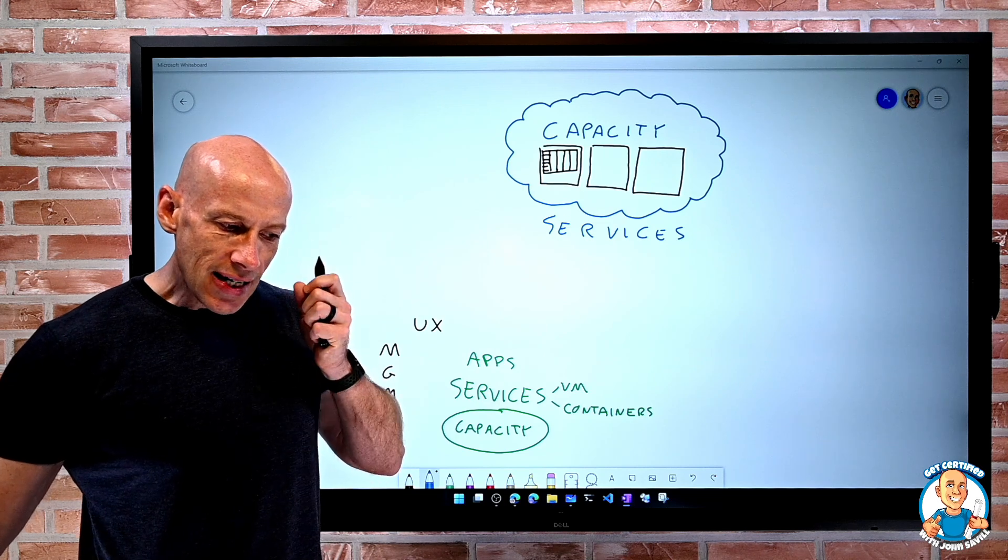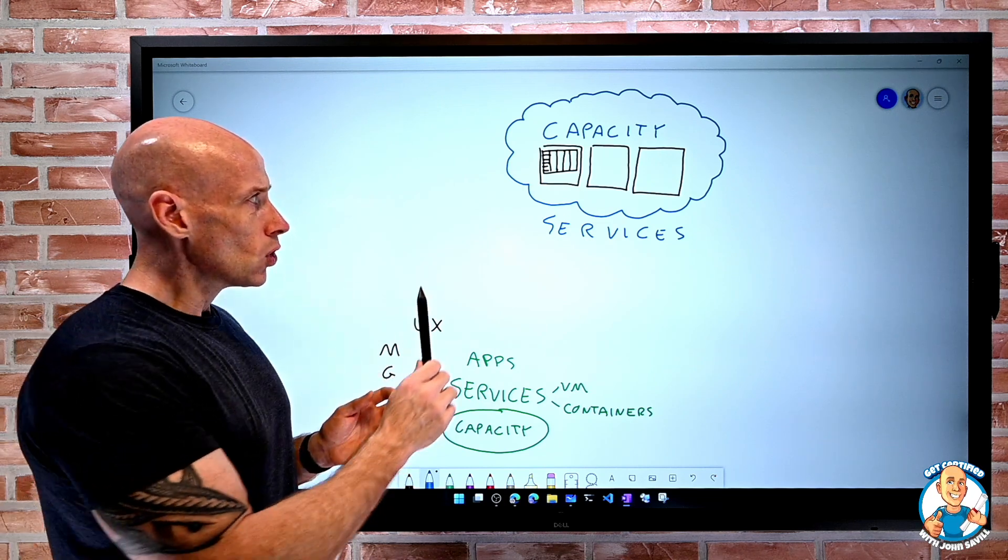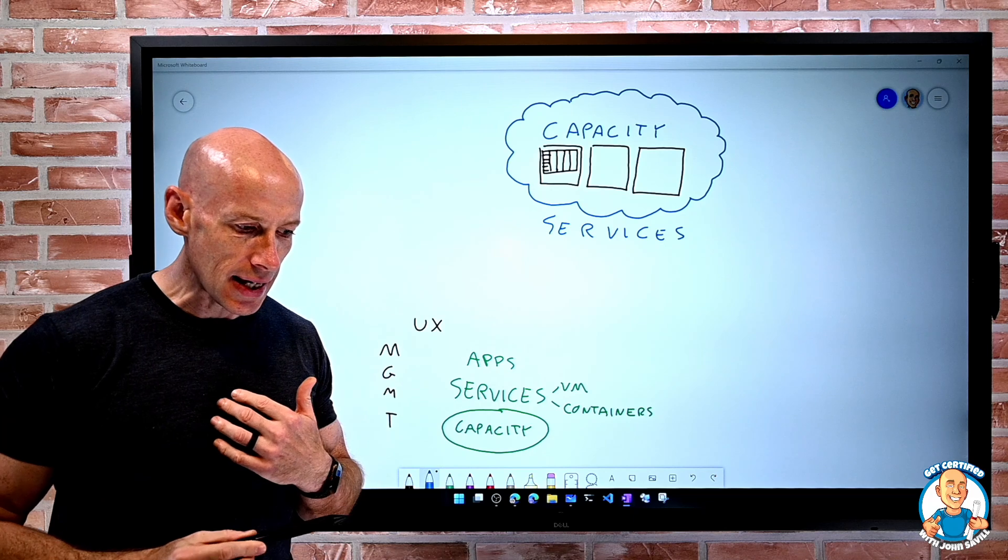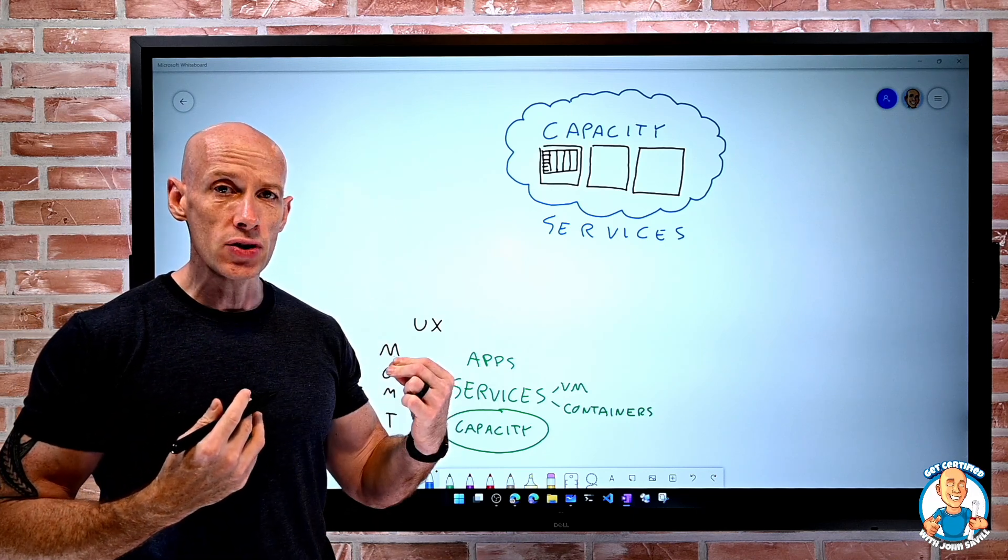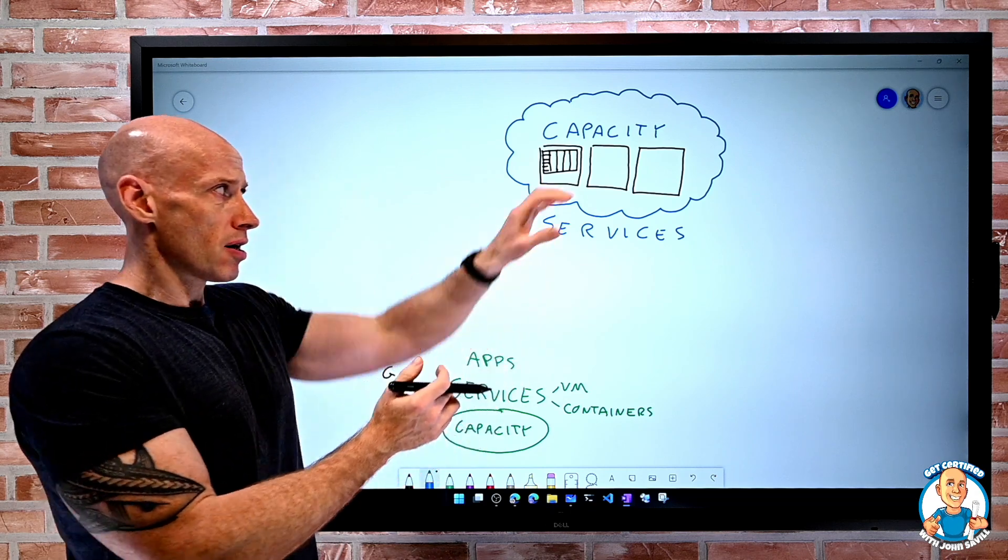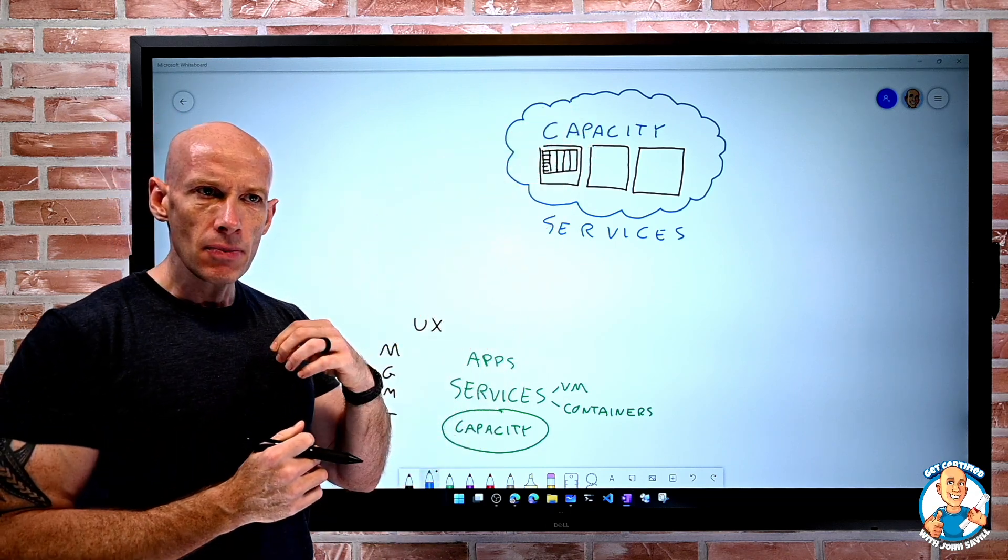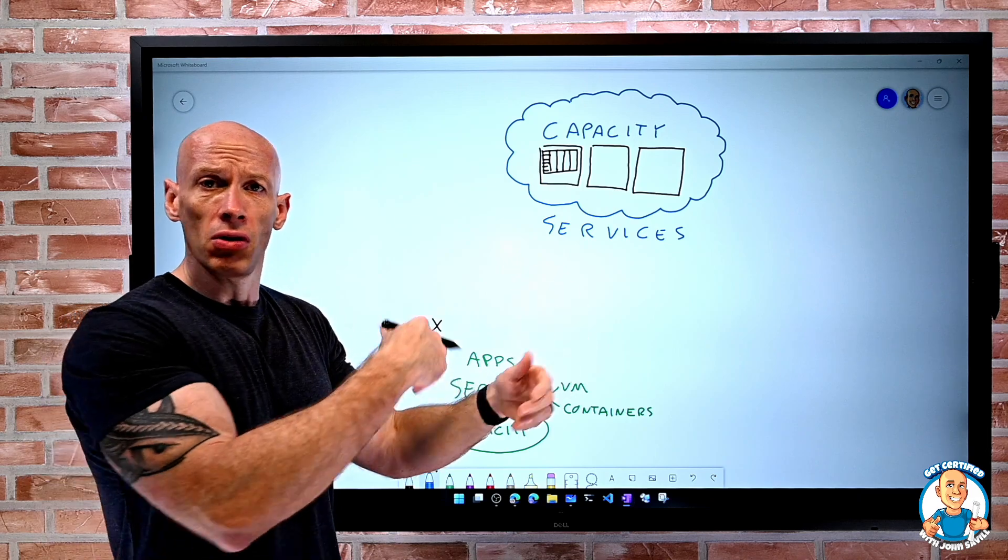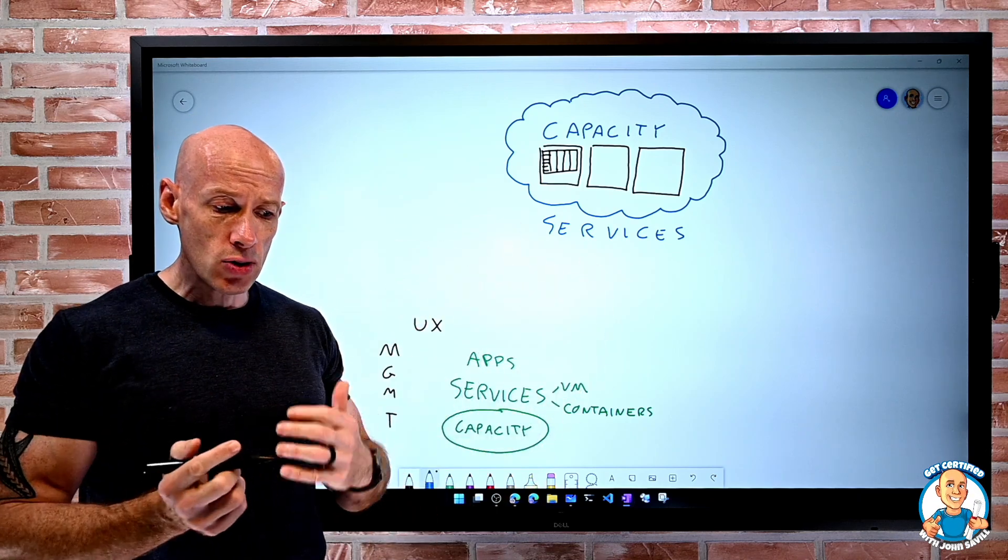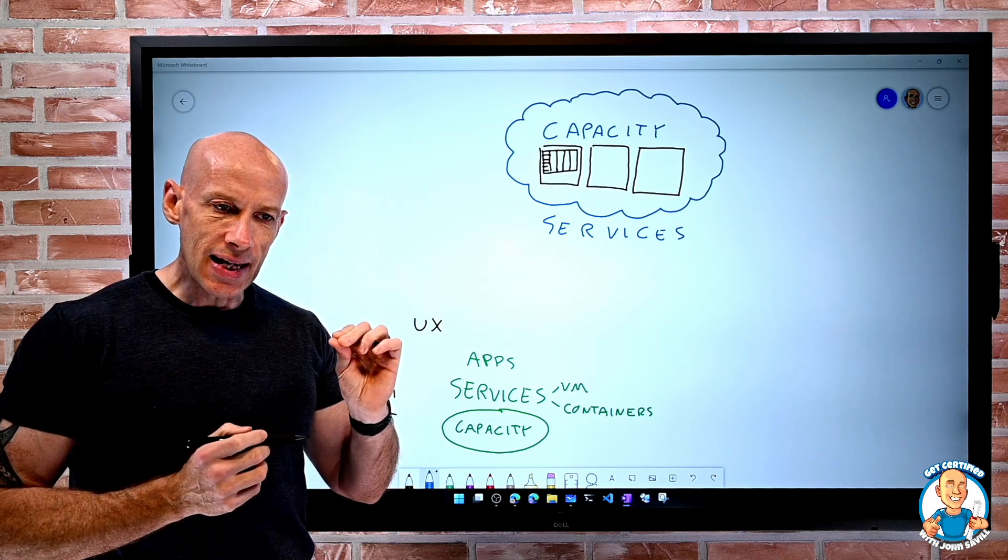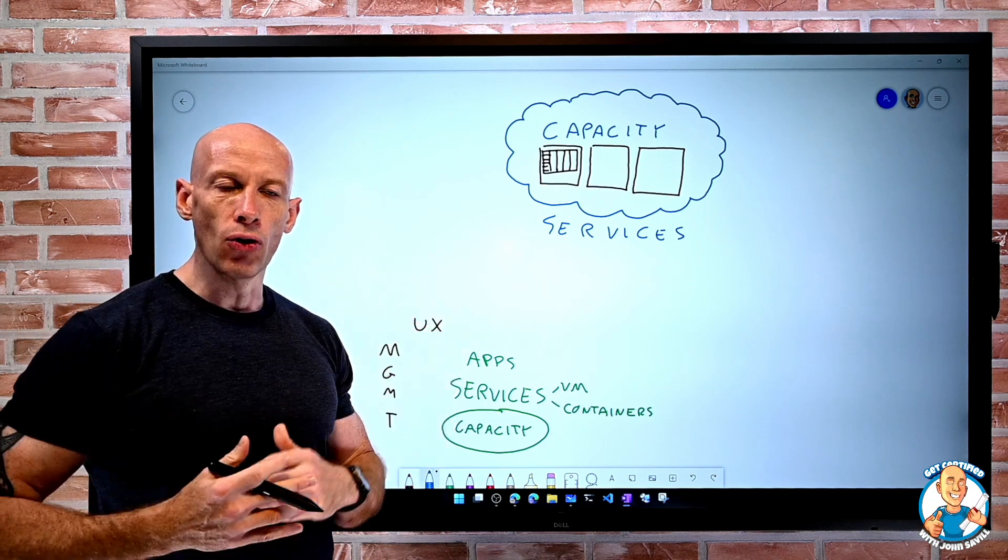Now, a defining characteristic of all of this capacity is when we use it, we pay for what we use. I'm not pre-buying a rack of servers. I pay per second for some VM running. I pay for the amount of storage I used that month. So that capacity is what I pay for.